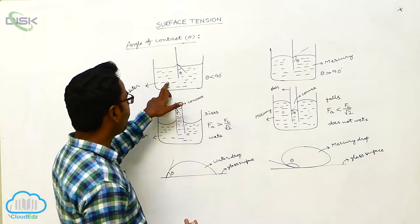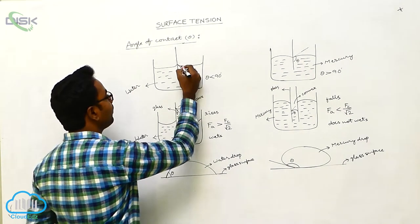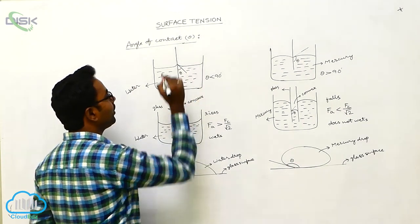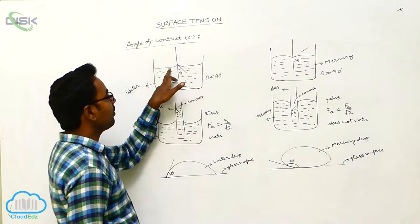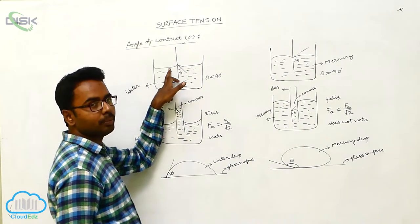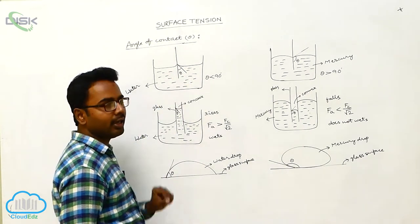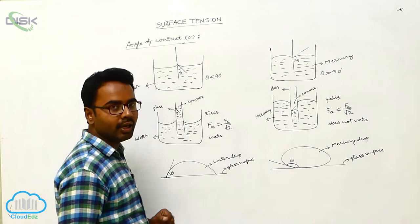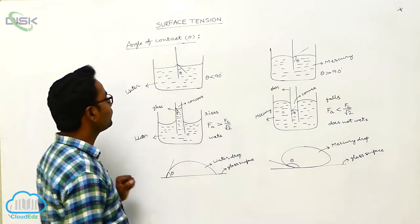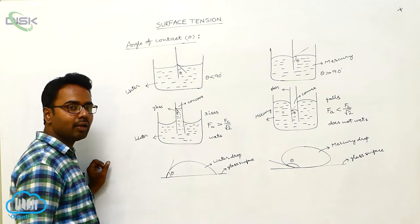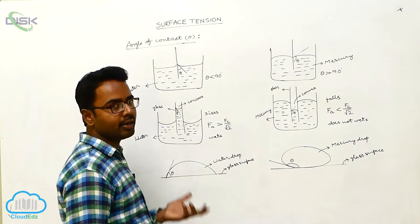Here we have taken water, which is the reason why the shape of the meniscus is concave. For water and glass, we find the angle of contact is less than 90 degrees. For the combination of glass and water, the angle of contact is less than 90 degrees.